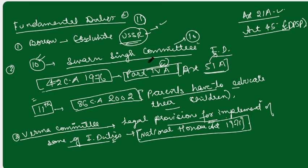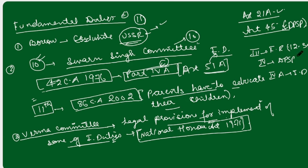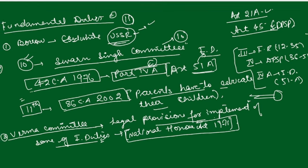So to summarize: Part 3 is your fundamental rights (Article 12 to 35), Part 4 is your DPSP (Article 36 to 51), and Part 4A is your fundamental duties (Article 51A). With this, the Indian Constitution portion is complete. If you have any doubts, ask me. Next we will quickly start the history component of GK. Till then, bye bye, take care, have a great day.